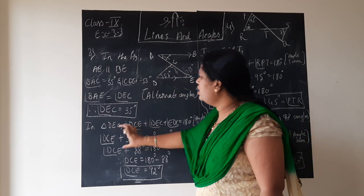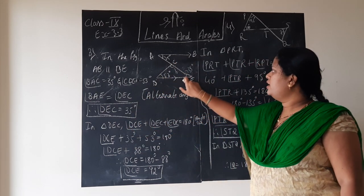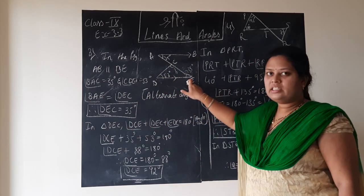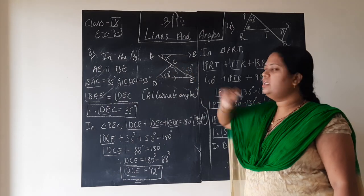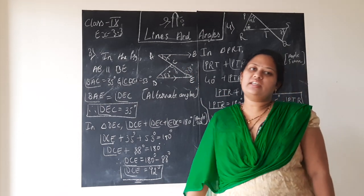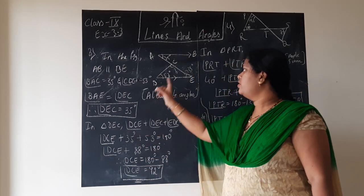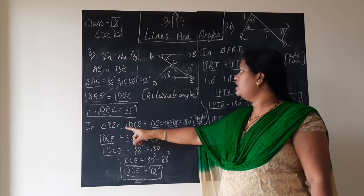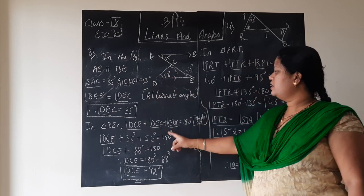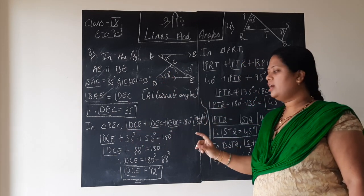Next, consider the small triangle DEC. We find angle C by applying the angle sum property. For triangle DEC: angle D plus angle C plus angle E equals 180 degrees.